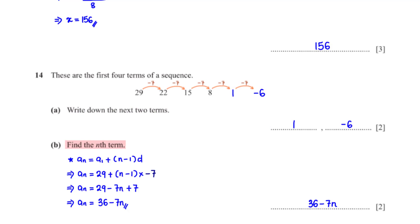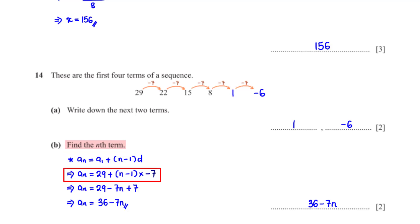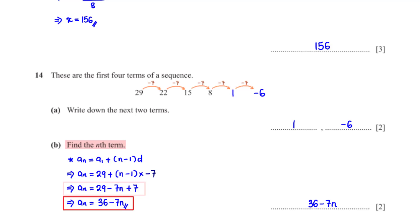Find the nth term. We use the formula for sequences with a common difference. The first term a1 is 29, and the common difference d is negative 7. Expanding: negative 7 times n is negative 7n, and negative 7 times negative 1 is 7; 29 plus 7 is 36. So the nth term is 36 minus 7n.